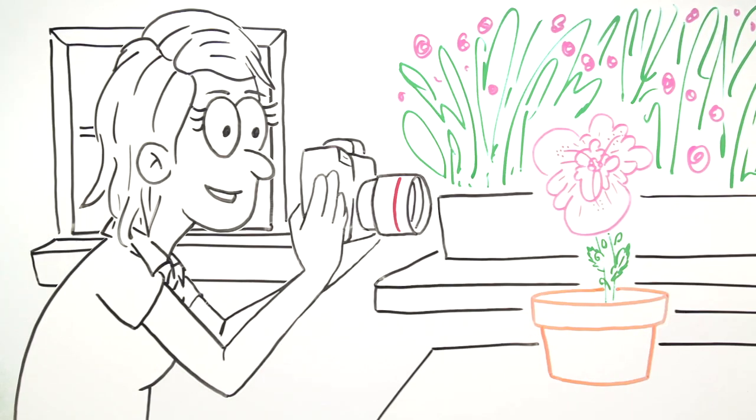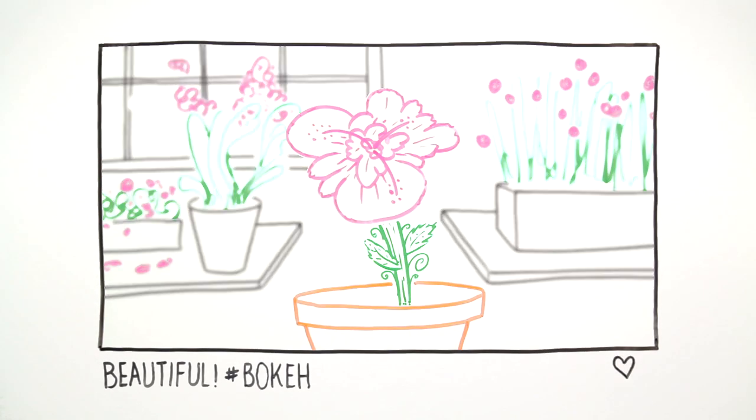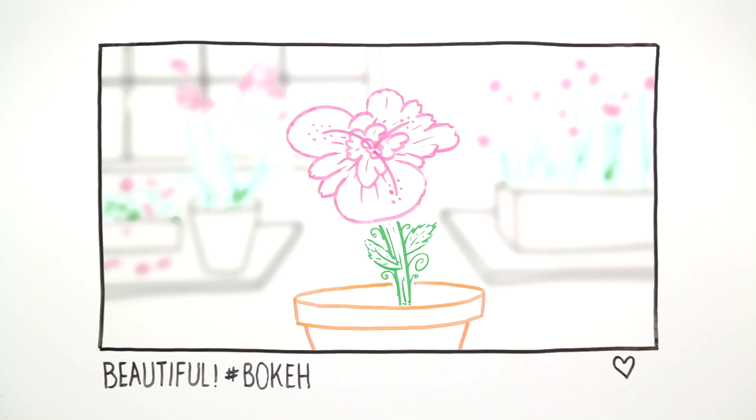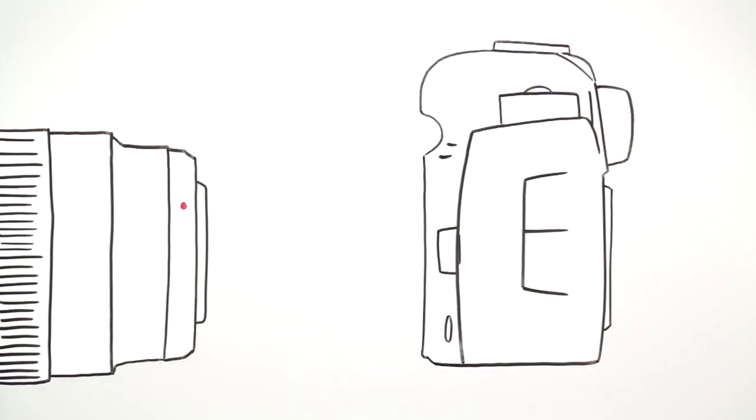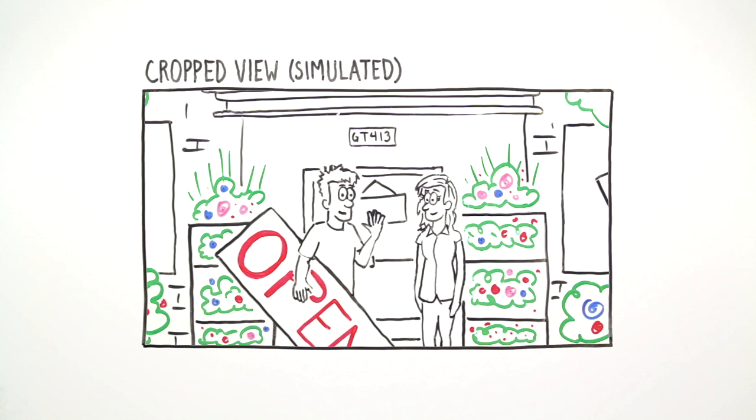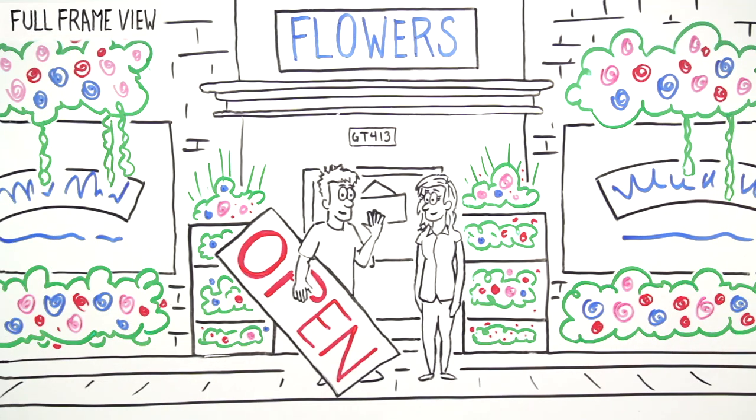A full-frame sensor can also deliver a more shallow depth of field to separate your subject from the background for gorgeous bokeh. Additionally, these sensors deliver the field of view and true focal length the lens was designed for.